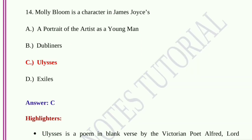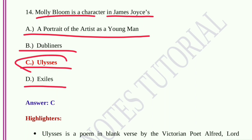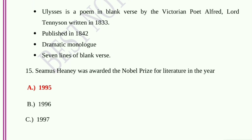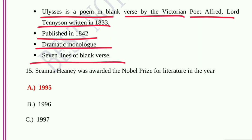Question number fourteen: Molly Bloom is a character in James Joyce's option A, A Portrait of the Artist as a Young Man; option B, Dubliners; option C, Ulysses; option D, Exiles. Option C, Ulysses, is the correct answer. Ulysses is James Joyce's celebrated novel. Molly Bloom is one of its central characters.